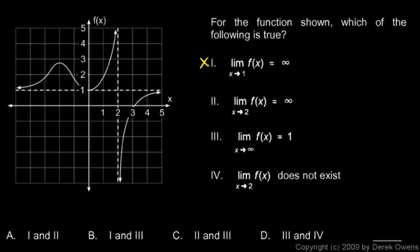The limit as x approaches 2 of f(x) equals infinity. Well, 2 is right here. And as we approach 2 from the left, this function does, in fact, zoom up toward infinity. But as we approach 2 from the right, this function zooms down toward negative infinity. So that's not correct.